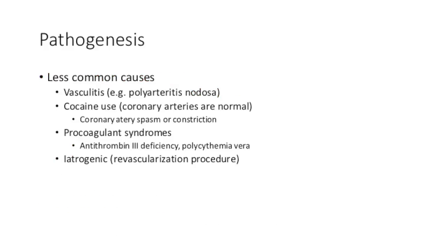Other less common causes include vasculitis such as small or medium vessel diseases like polyarteritis nodosa; cocaine use, where coronary arteries can still be normal but can lead to coronary artery spasm or constriction causing acute hypoxia to the affected cardiac muscles; procoagulant syndromes such as antithrombin III deficiency or polycythemia vera; and iatrogenic causes, for example where a patient undergoing a revascularization procedure has a thrombus accidentally dislodged, causing hypoxia further downstream.